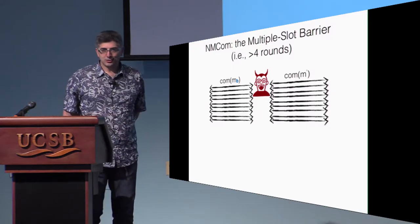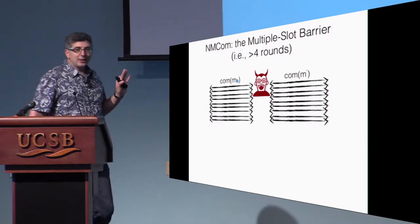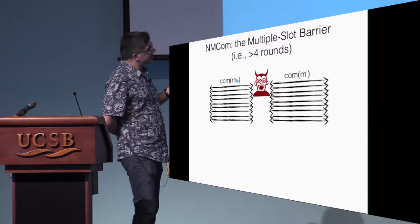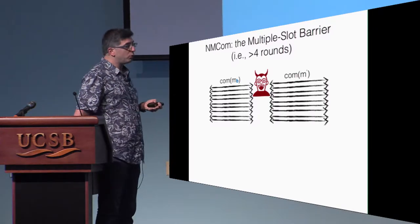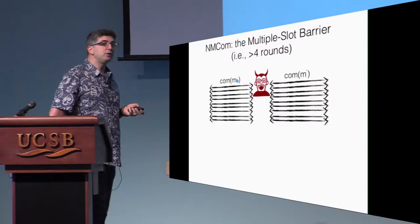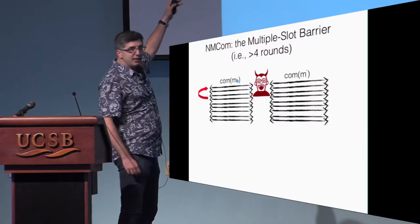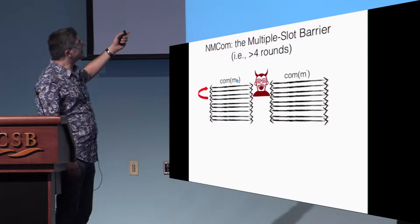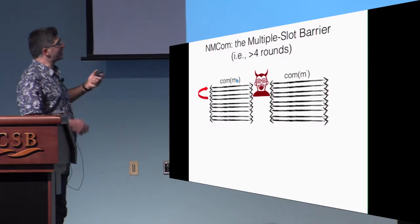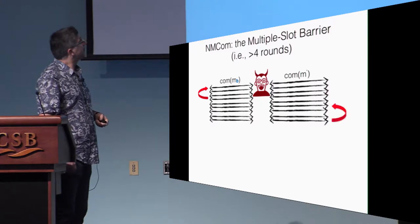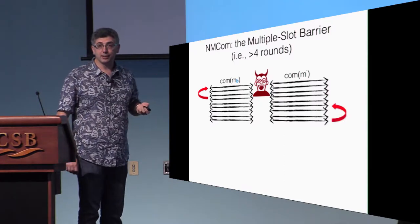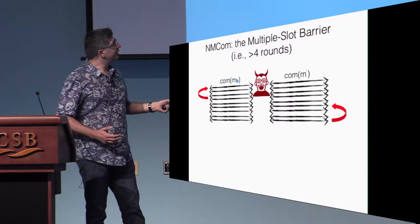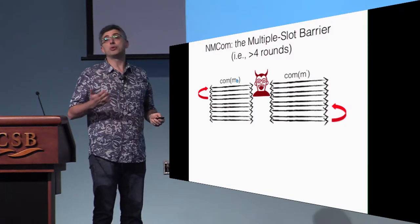Now let's start with the big problem we had to solve. If you have many rounds — more than four — and want to design a non-malleable commitment scheme, you can make some rewinds on the left in a reduction to simulate something, extract something, and also do it on the right, because with many rounds the rewind on the left does not interfere with the rewind on the right. But you need more than four rounds.